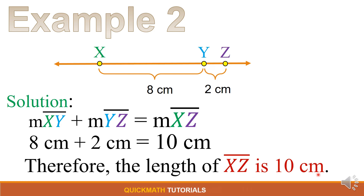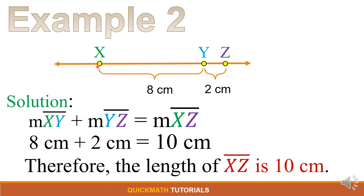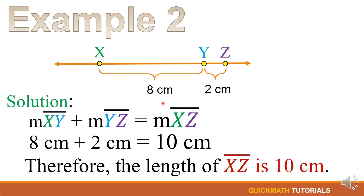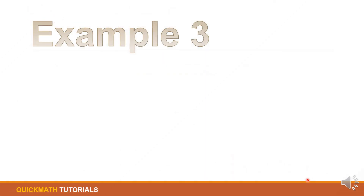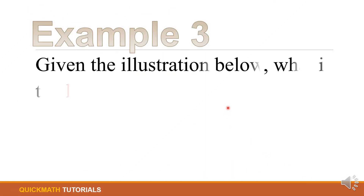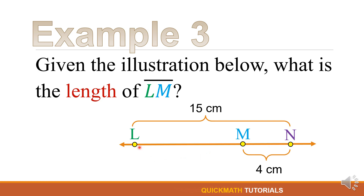In our illustration, to find the measure of length X up to Z, we just add the two measurements: 8 plus 2 is equal to 10 cm.